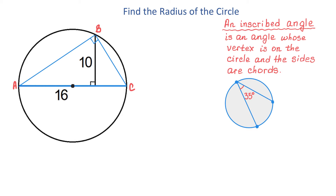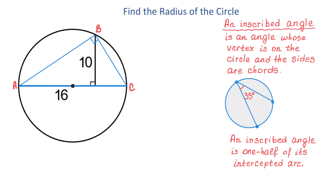Now, we also need to know that an inscribed angle is one half of its intercepted arc. Here, this is the intercepted arc, and if this angle measures 35 degrees, then the intercepted arc will measure 70 degrees. So you see the relation: the inscribed angle has to be half of the intercepted arc.